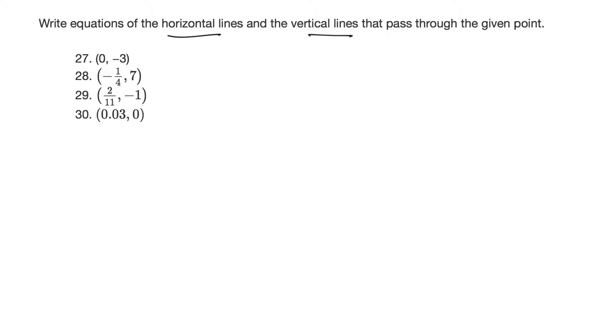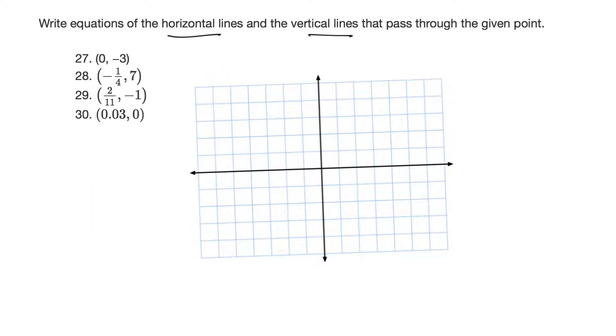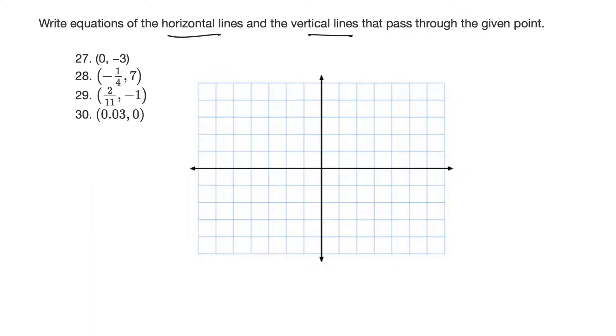So let's put a quadrant out here. Okay, so there's a quadrant, a little bit bigger. Okay, so through the given point. So let's try the first one, (0, -3). So (0, -3) would be the point right there.